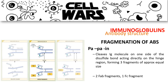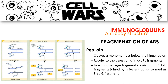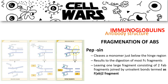The other proteolytic enzyme used is pepsin, which cleaves just below the hinge region, resulting in digestion mostly of the Fc fragment. It leaves one large fragment consisting of two fragment antigen-binding regions joined by a disulfide bond, which is termed the F(ab')2 fragment.